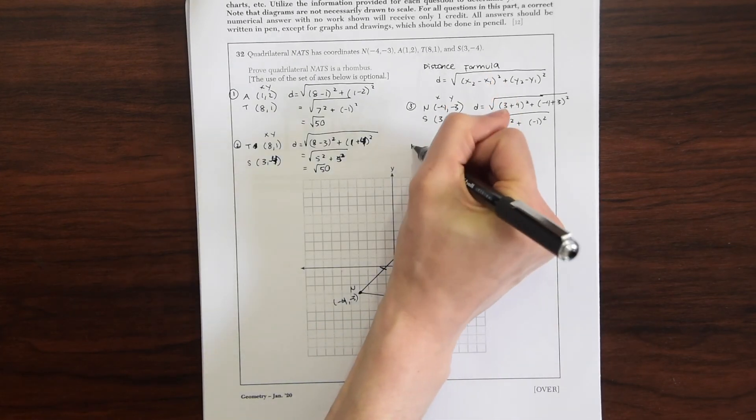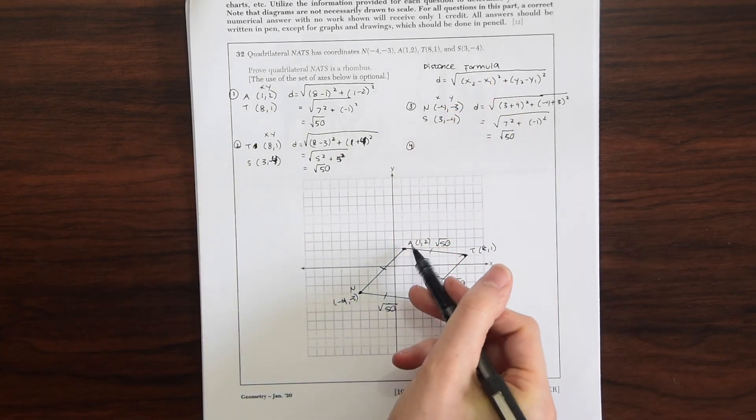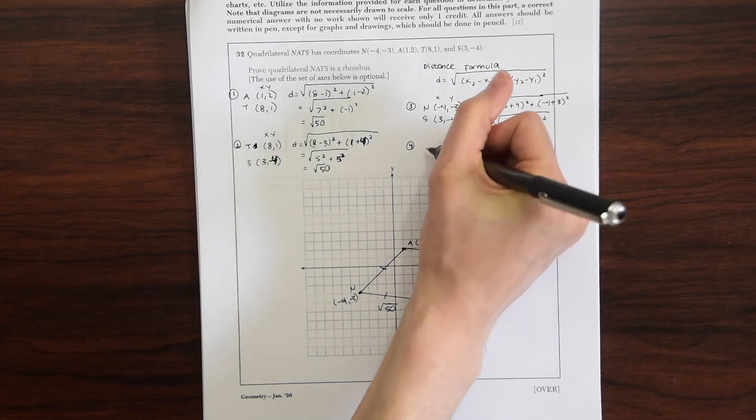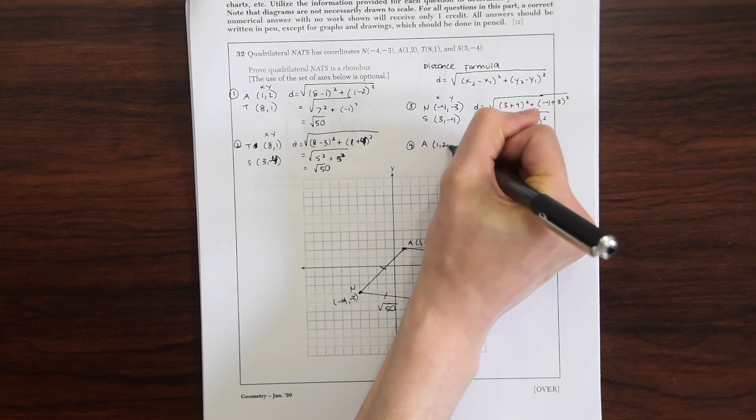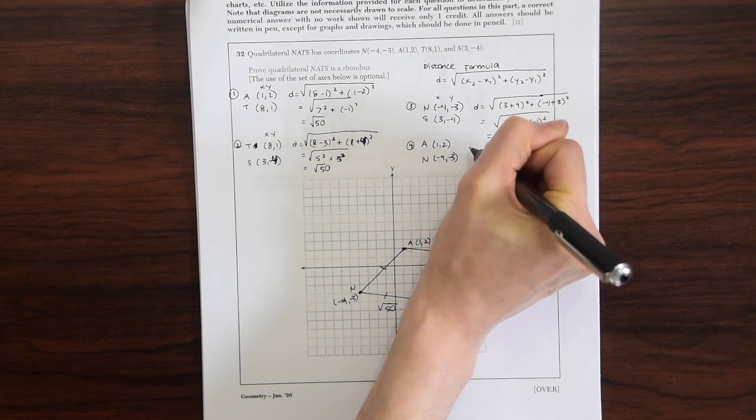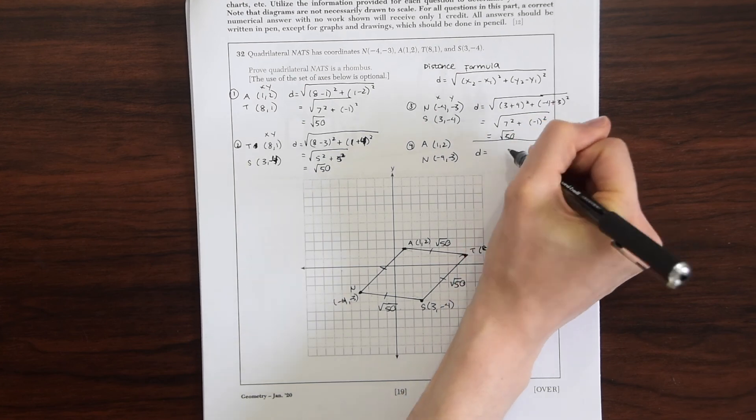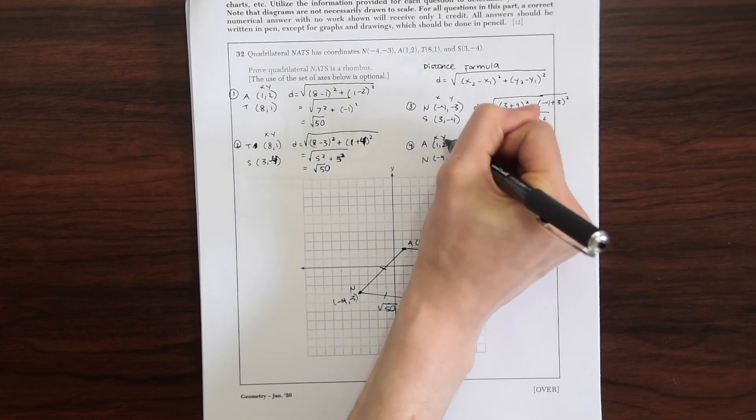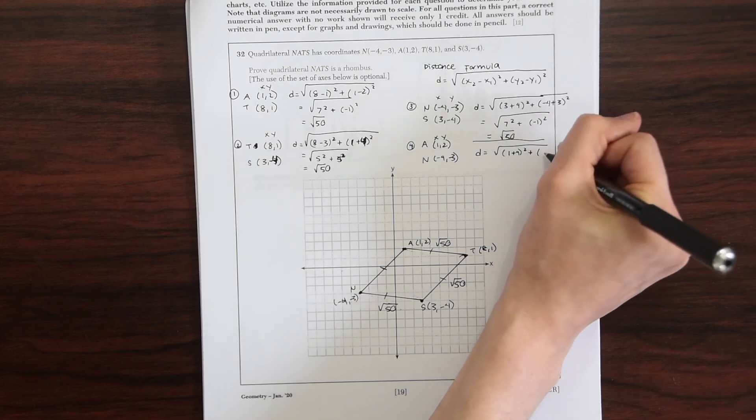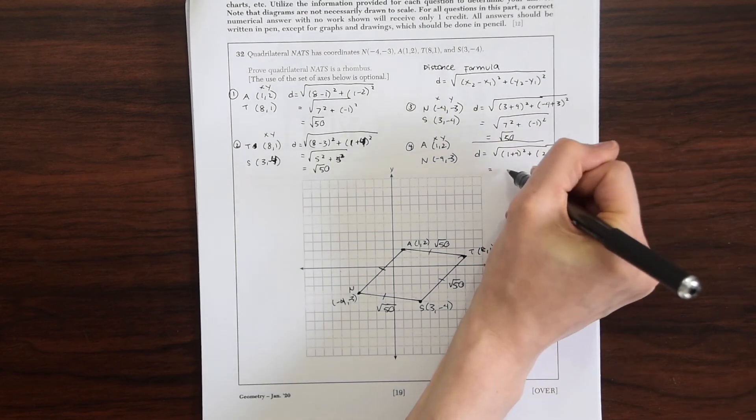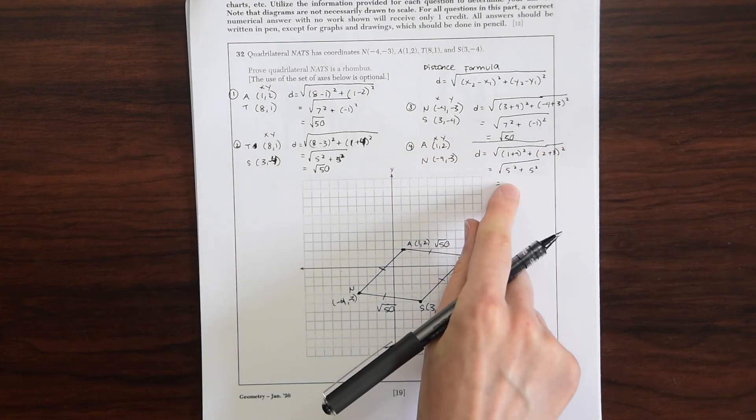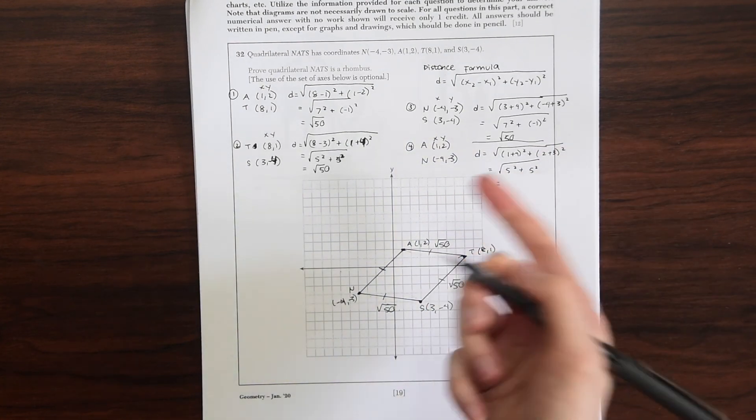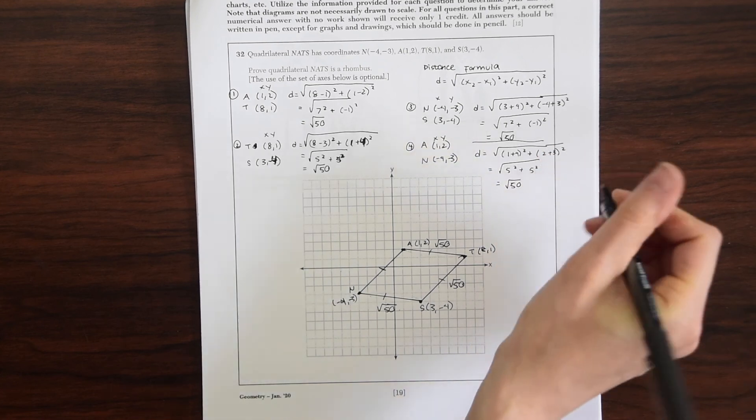Now we just have that last side to check, AN. Where A is (1,2) and N is (-4,-3). So we get 5², which is 25, plus 5², which is 25. So 25 + 25 is just √50 again.